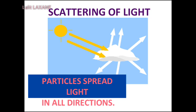Air is a mixture of very fine particles of some gases, dust, smoke, and moisture. When the rays of light fall on these minor particles, the particles spread the light in all directions. This natural phenomenon is called scattering of light.